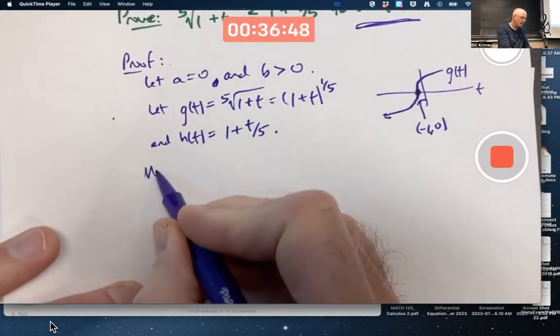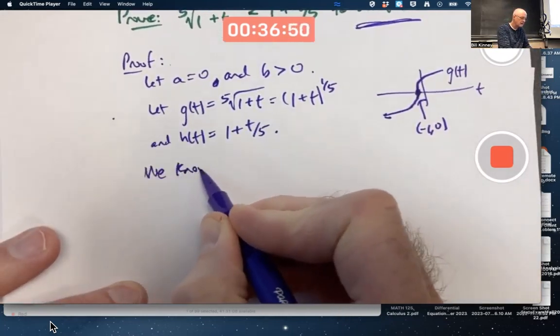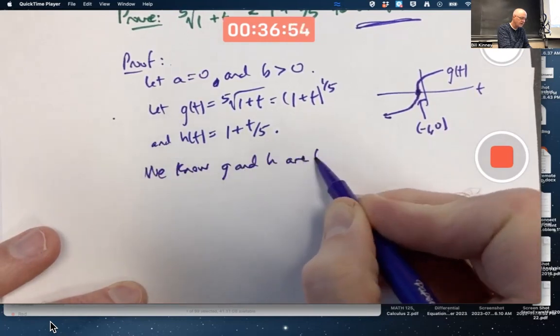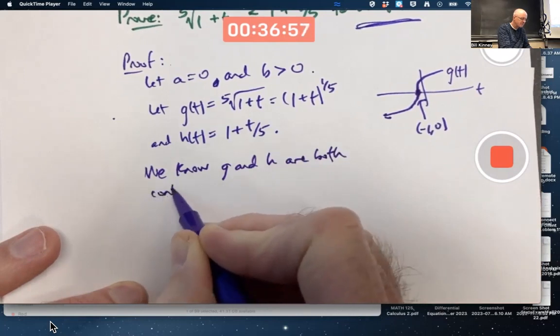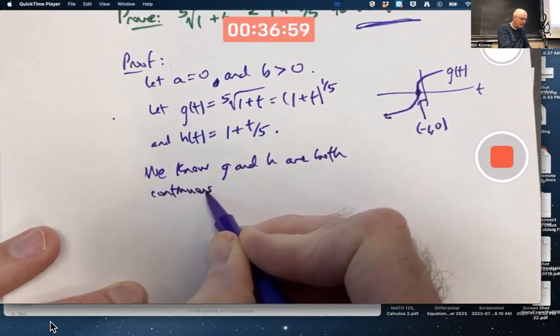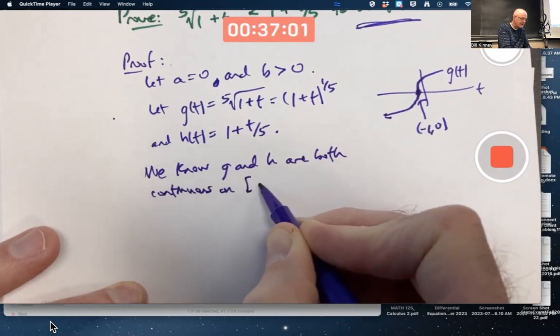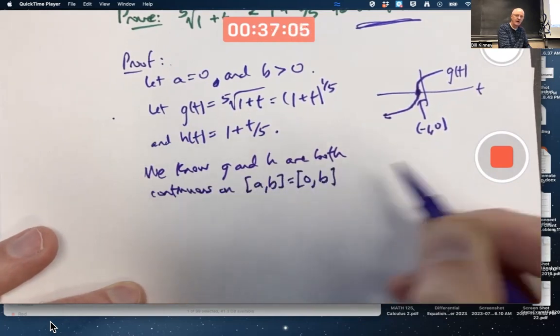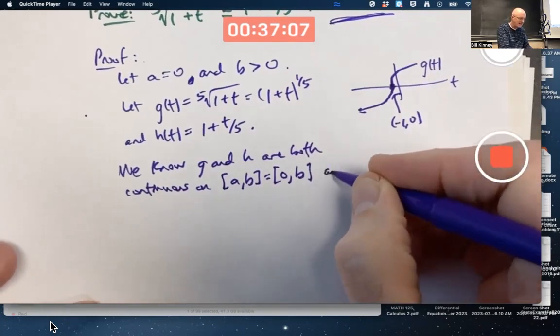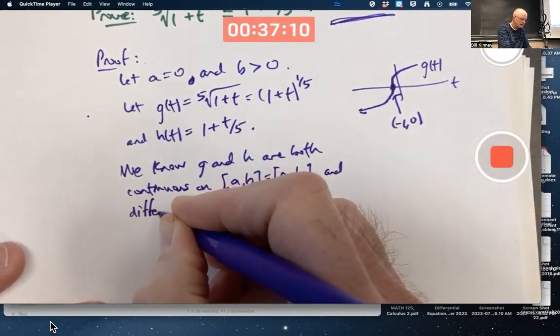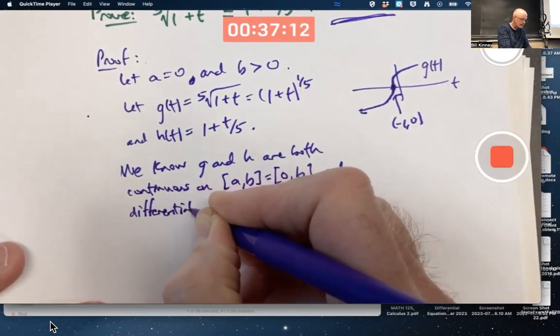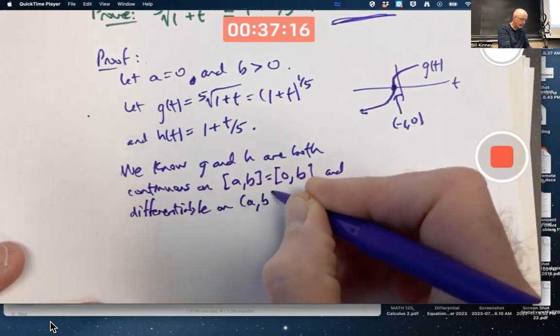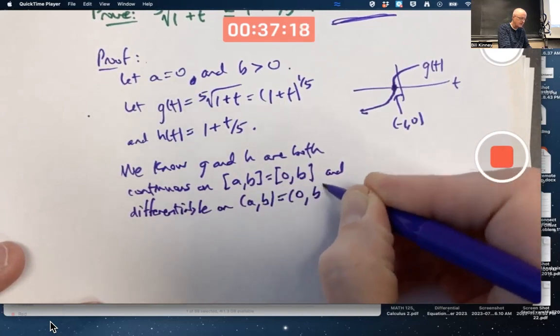We can say: We know g and h are both continuous on the interval [a,b] where a is zero and b is some arbitrary positive number, and differentiable on the open interval (a,b) where a is zero and b is some arbitrary positive number.